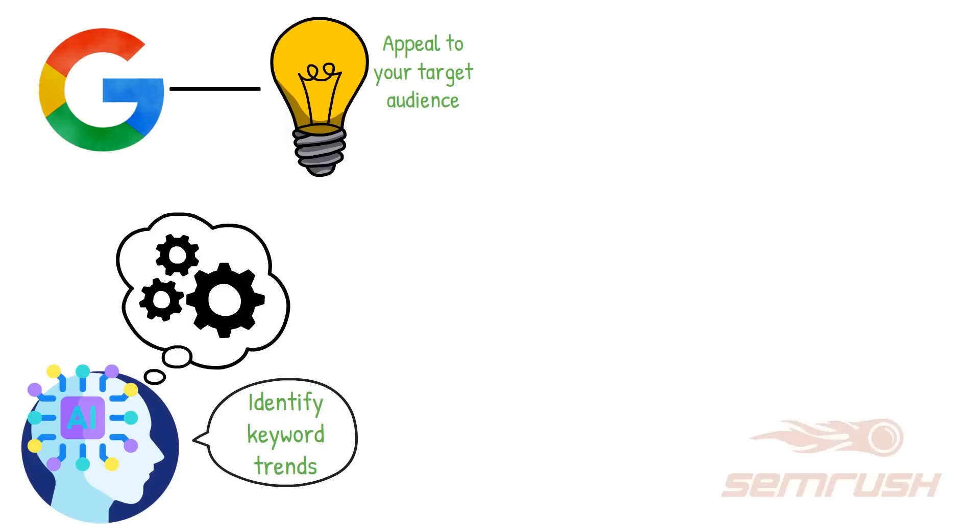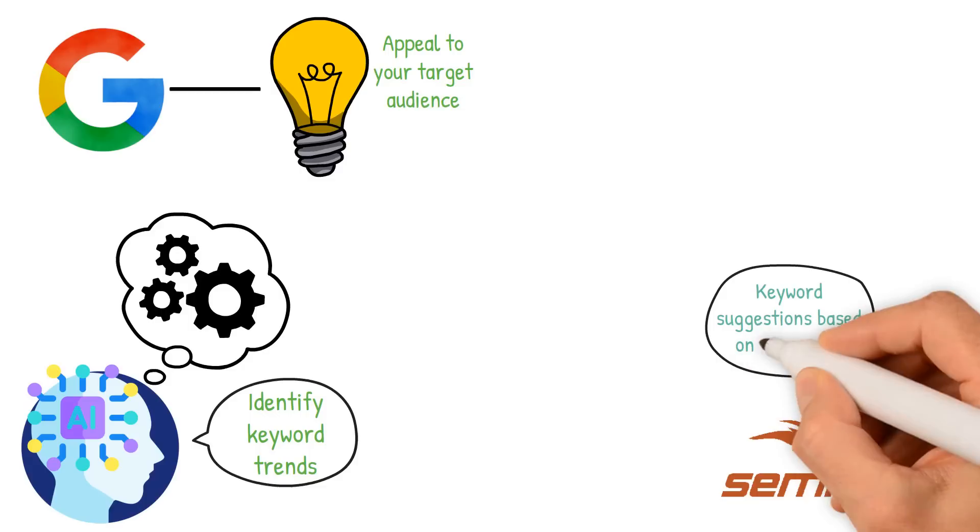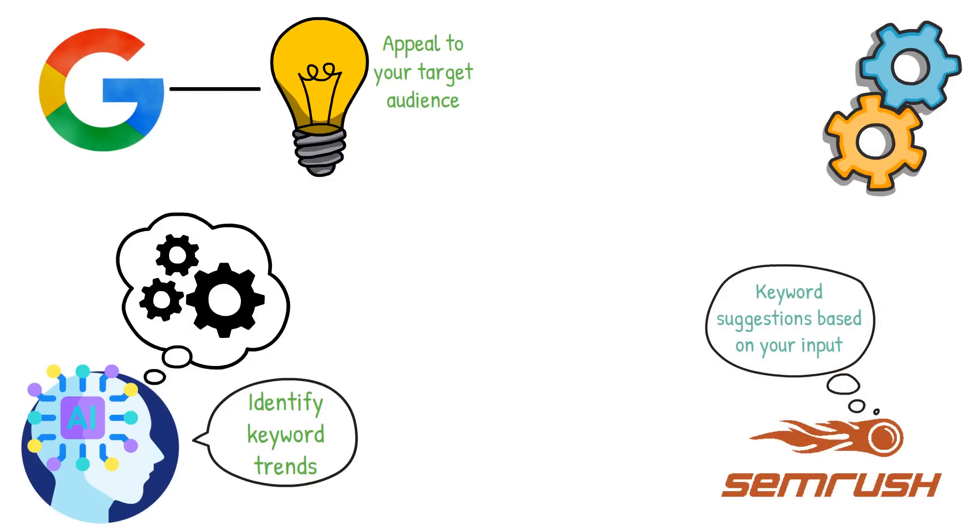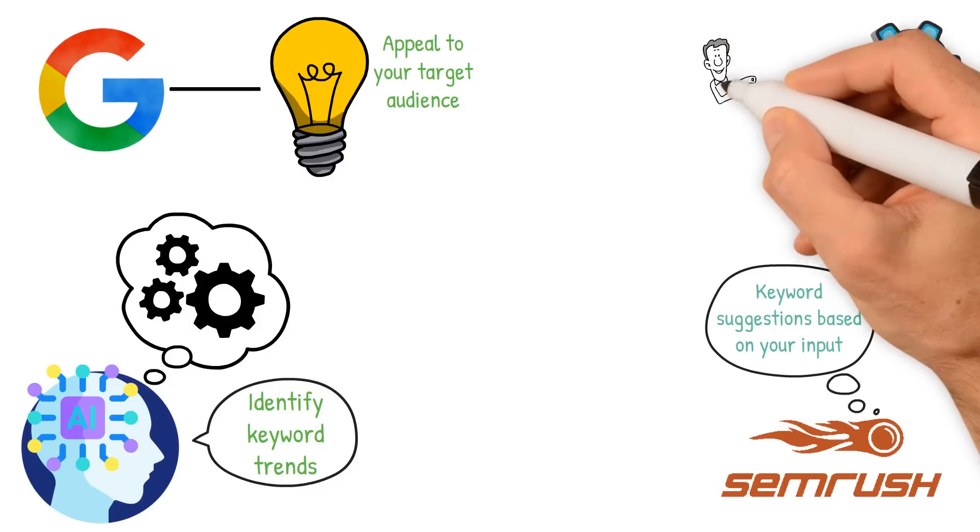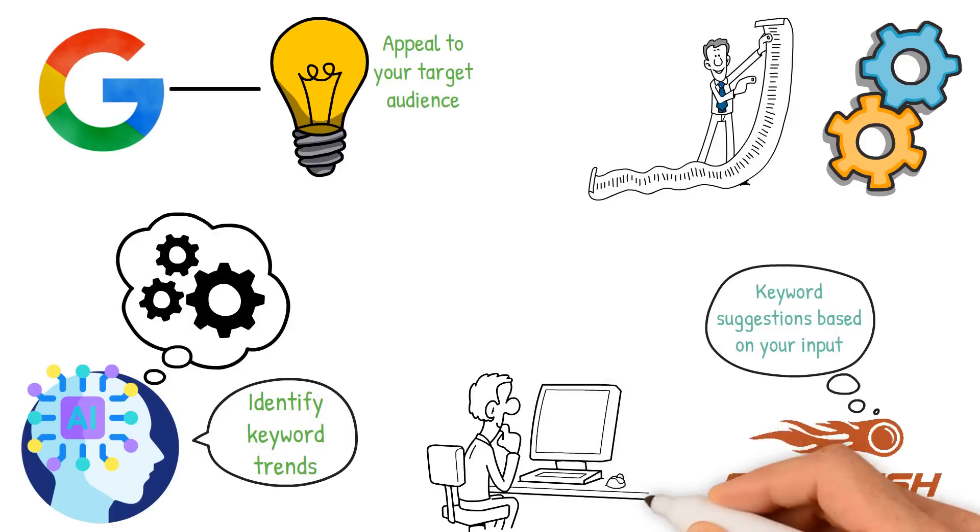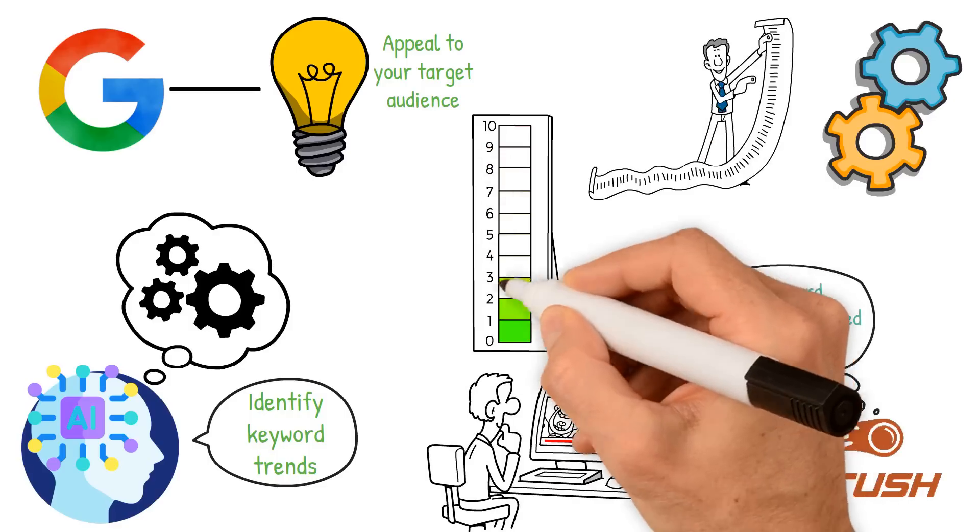Another useful tool is SEMrush's Keyword Magic Tool. It uses AI to provide keyword suggestions based on your input. The tool analyzes billions of keywords and identifies long-tail keyword phrases that are likely to drive traffic to your site. This can help you create content that is optimized for specific search queries, increasing your chances of ranking higher in search engine results.